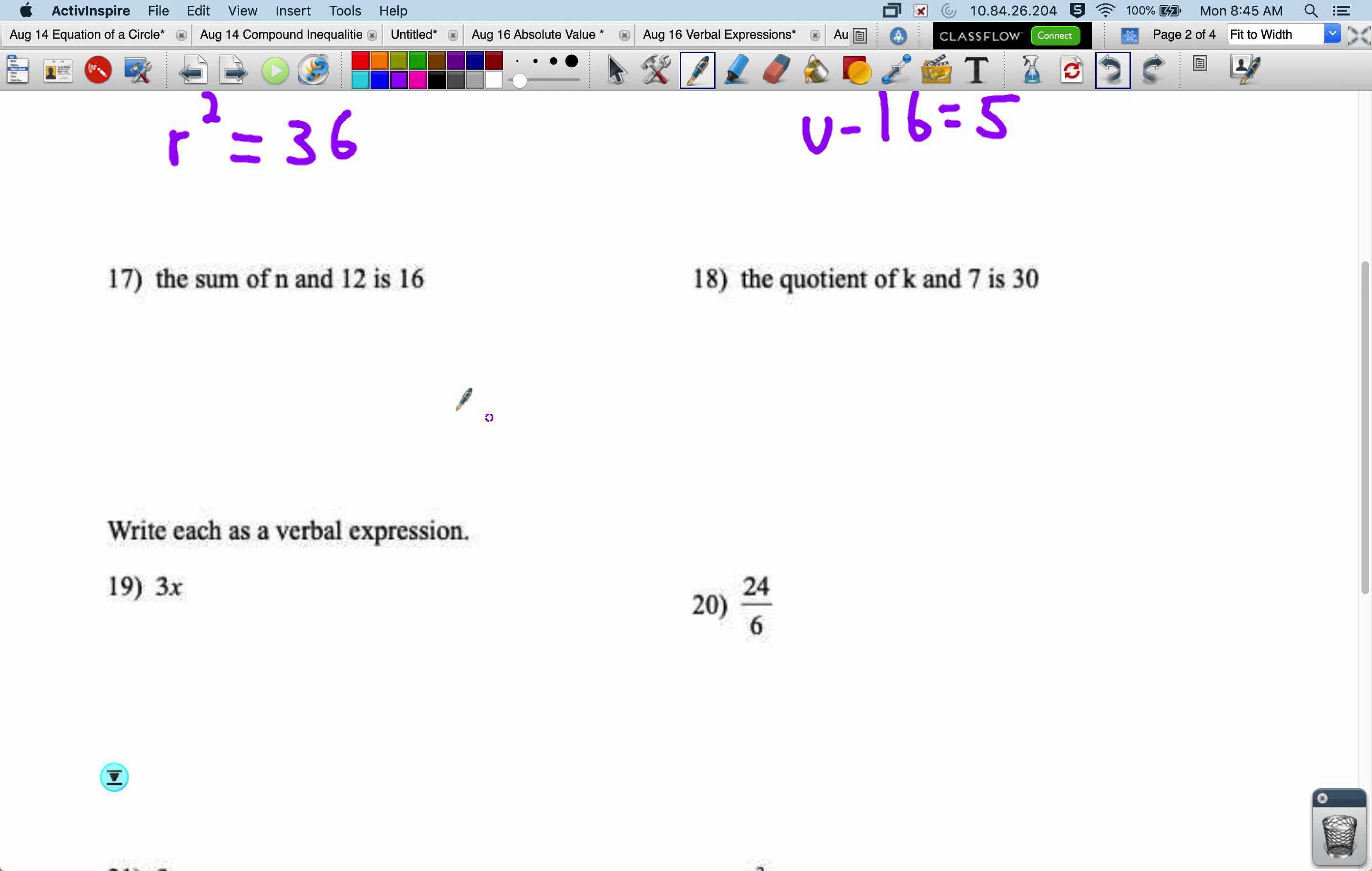We'll just do 17 and 18 real quick. The sum of n and 12, so n plus 12 is 16. The quotient of k and 7 is 30.